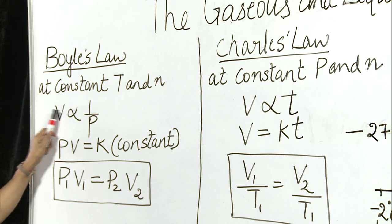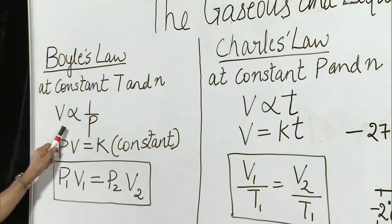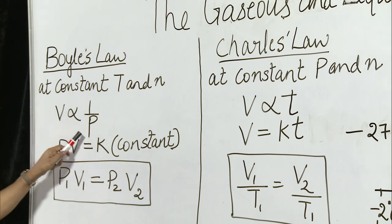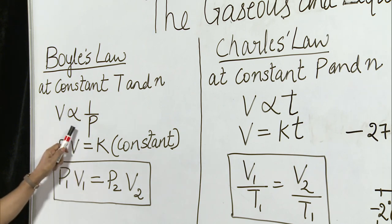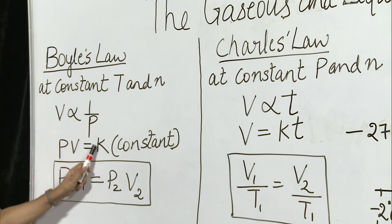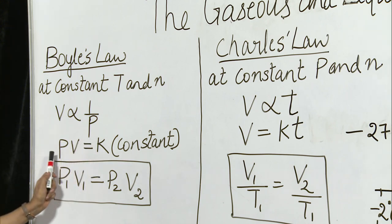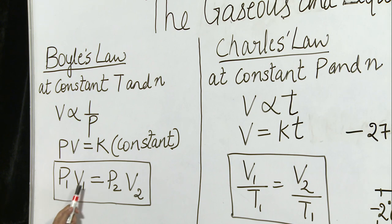So we can write V is inversely proportional to P. If we remove the proportionality sign and introduce a constant, we get PV = constant. Therefore, we can say the product of pressure and volume is constant, giving us P₁V₁ = P₂V₂.